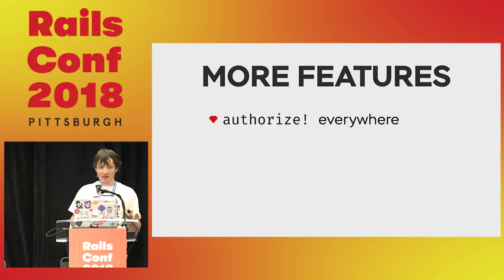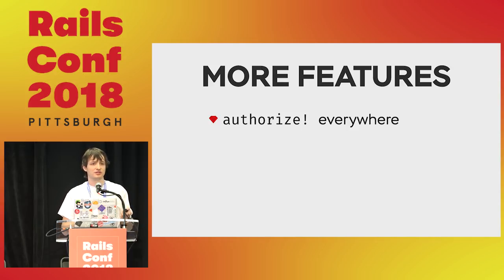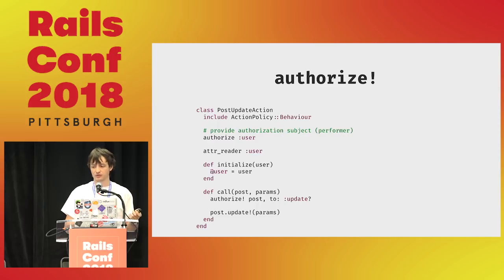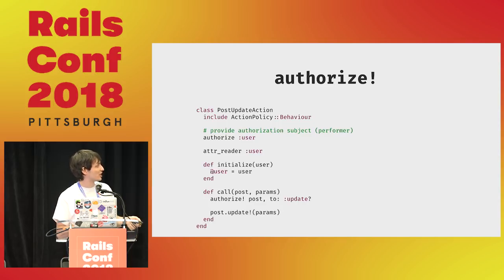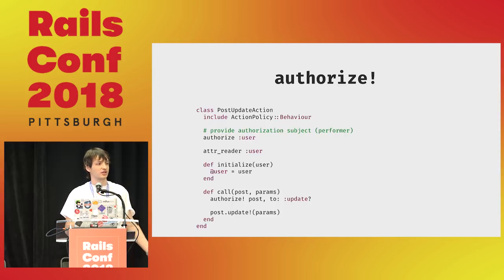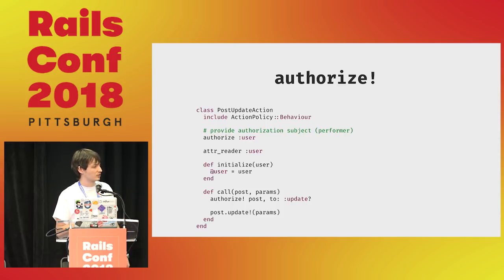More features: I've been talking mostly about controllers, but Action Policy is built so you can add authorize and allowed_to anywhere you want. Just a quick example — we have a module called action_policy behavior. Just include it into your class and add some configuration. You have to specify your authorization context — authorization subject performer, so in that case, user. And you can just call authorize and everything else works like in your controller. So if you're using Hanami, for example, you can use Action Policy with it. It's actually not a Rails-specific framework — it's built to be dependency-less.